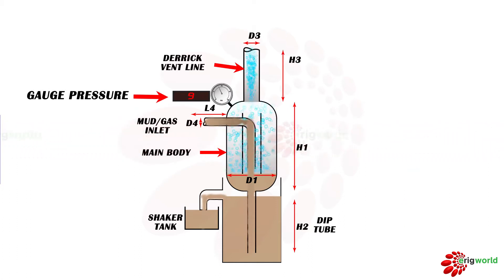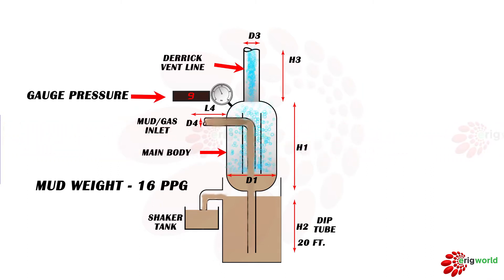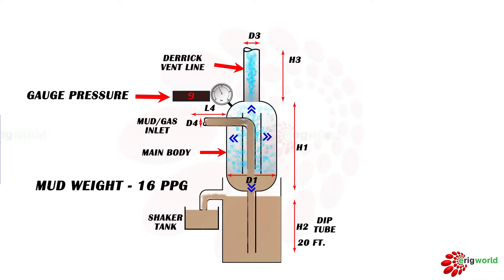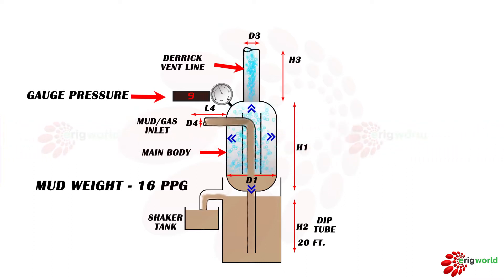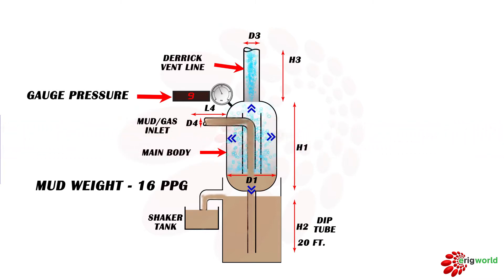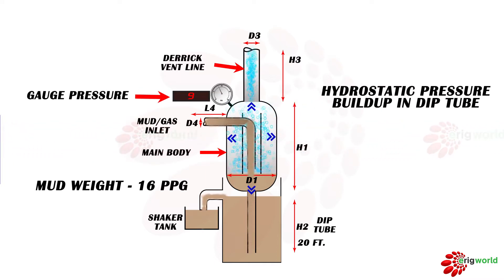Let us understand an example where the deep tube height is 20 feet and mud weight is 16 ppg. The pressure build-up in the MGS is 9 psi, acting at all points within the vessel. So when gas is acting at the bottom of the vessel, why is it not penetrating the deep tube and instead going to the shaker area? The reason is that something is stopping the gas from penetrating the deep tube — that is the hydrostatic pressure built up in the deep tube.